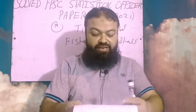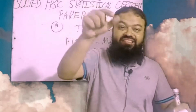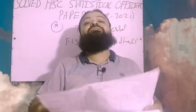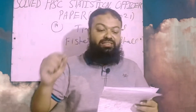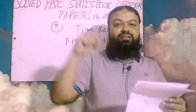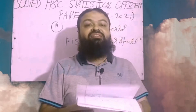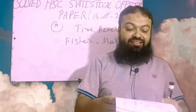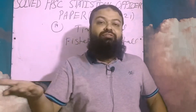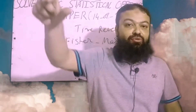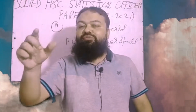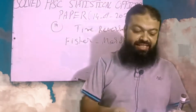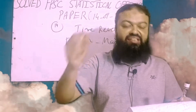Question number fifteen: if the sample size increases, the estimator becomes a consistent estimator — consistent estimator is the correct option. When n approaches infinity, the estimator becomes the consistent estimator. Question number sixteen: the probability distribution of all samples is called the sampling distribution — correct option. Question number seventeen: the central limit theorem states that when we increase the sample size, the sampling distribution becomes the normal distribution.